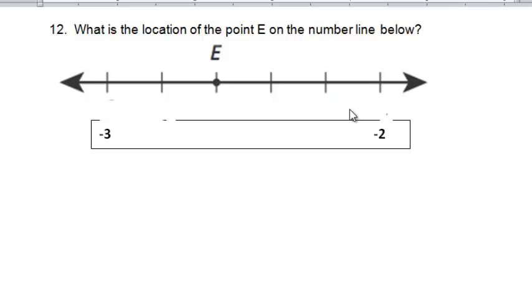Now, if we look at the number line, we can see that the number line goes between negative 2 and negative 3. So that means that each of these little sections is a portion of one unit.